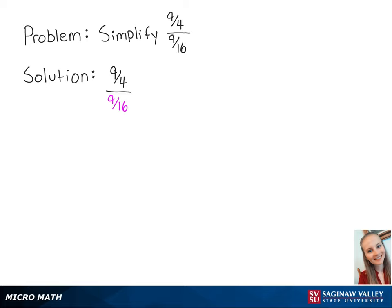For this problem, we're going to simplify 9 fourths divided by 9 sixteenths. When we divide two fractions, we multiply the numerator by the reciprocal of the denominator.